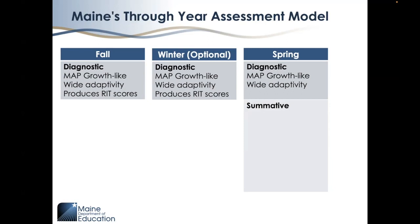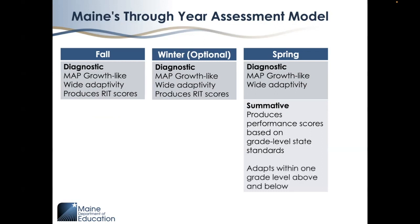This portion of the spring assessment is the same as the fall and winter assessments. The other two-thirds of the questions comprise the summative portion of the spring assessment. The questions on the summative portion are used to generate a score that measures students' achievement according to grade-level state standards. In order to accurately and precisely measure student achievement, the summative portion adapts within one grade level above and below the student's actual grade.